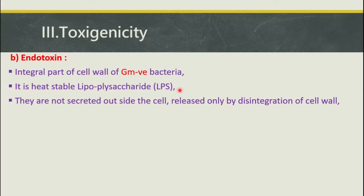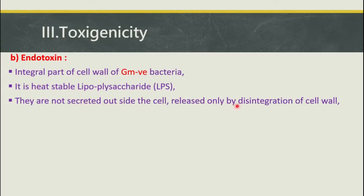Endotoxins are not secreted outside the cell — they are released only by disintegration of the cell wall. This is the most important difference between exotoxin and endotoxin. Exotoxins are freely secreted and thus heat-labile, while endotoxins are released only when the gram-negative bacterial cell wall disintegrates, making them heat-stable.